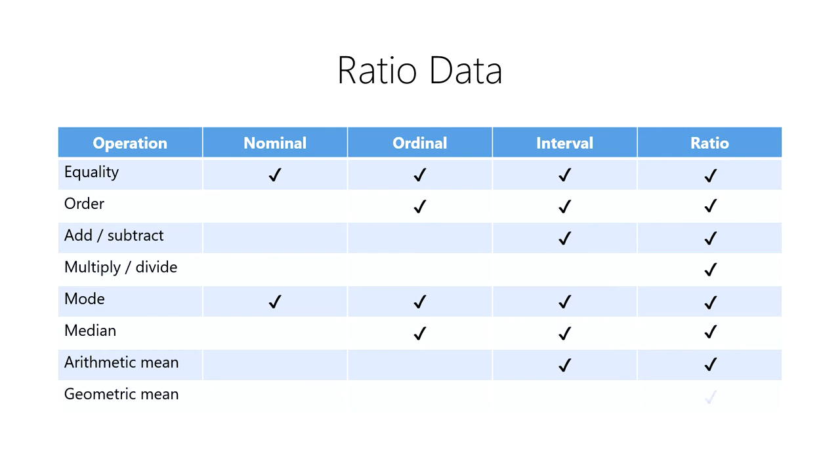In addition, we can determine the geometric mean, which is a method of averaging used for values with widely varying ranges.